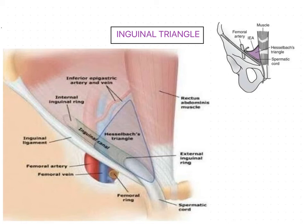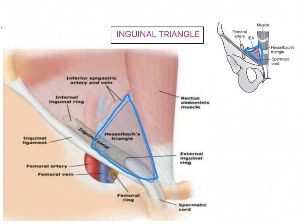This inguinal triangle is seen on the back of the lower part of the anterior abdominal wall. Here you can see this is the lower portion — on the back of the anterior abdominal wall you can find this triangle called the inguinal triangle, also called Hesselbach's triangle.